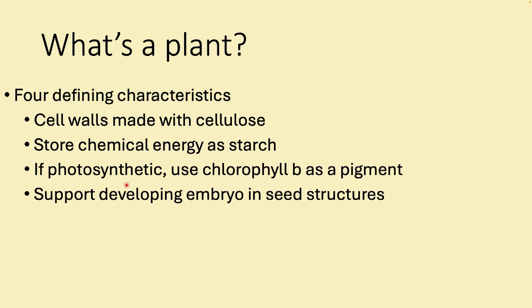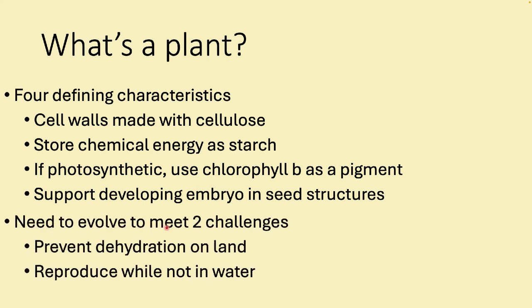If plants have seeds, those structures help support the embryo as it grows. Many of these characteristics help plants meet two challenges: most plants are terrestrial, so they need to prevent dehydration on land and reproduce without being in water. Some plants still need very wet soil to reproduce, but most don't.